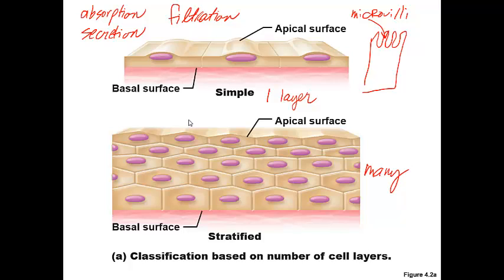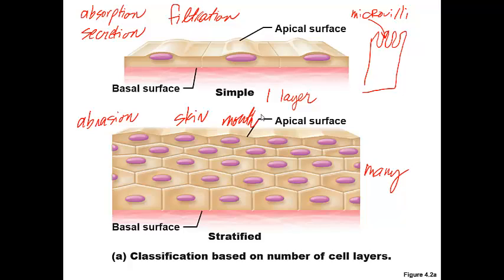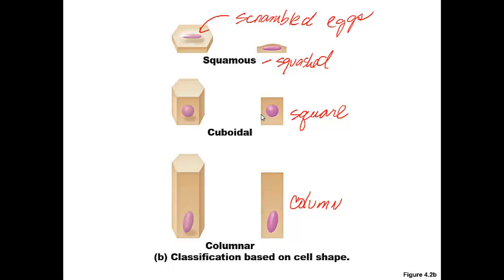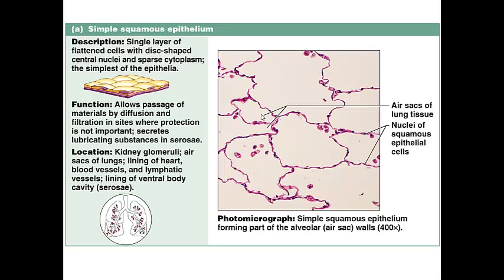We find stratified epithelium in places of the body where there is lots of abrasion that could happen, so where there could be lots of cell loss. The skin is going to be stratified epithelial, for example. Other examples of stratified epithelia could be lining the mouth, the anus, the vagina, or lining the inside of the urethra. You have pictures in your textbook that show the description of the cell, its function, and where it's going to be located.